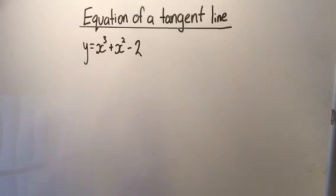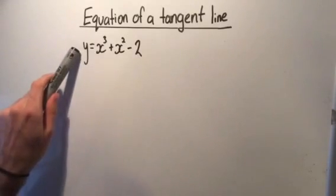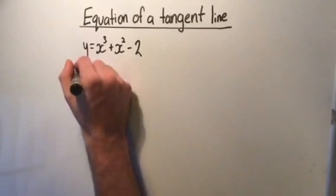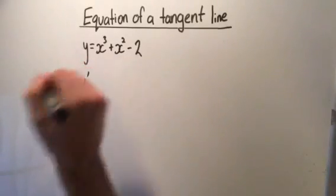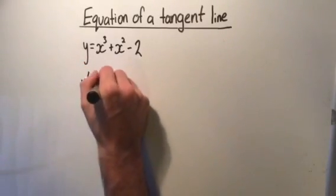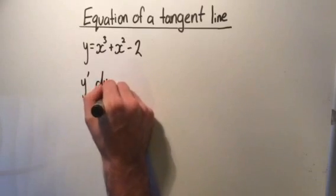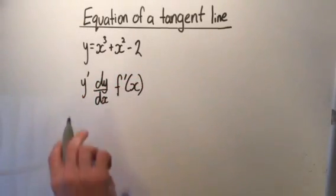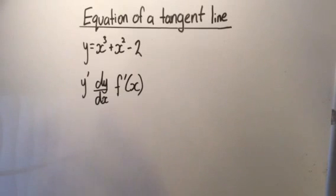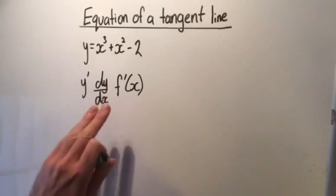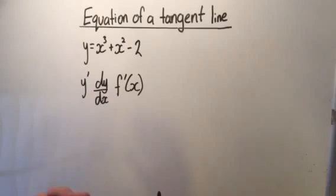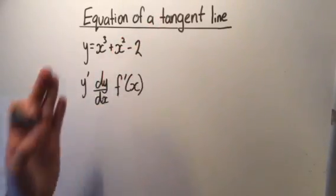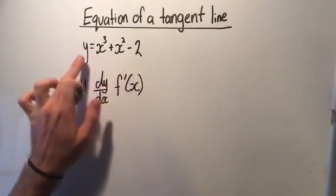So we've already looked at what differentiation is and we've looked at how the derivative is just a separate equation to this one shown by the symbol y dash or dy on dx or f dash x. All of these mean the derivative and we know that that is used to form a separate equation that helps us find the gradient of that tangent at any point on this line.